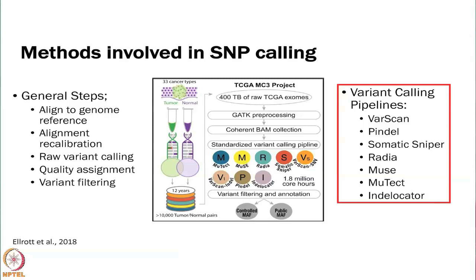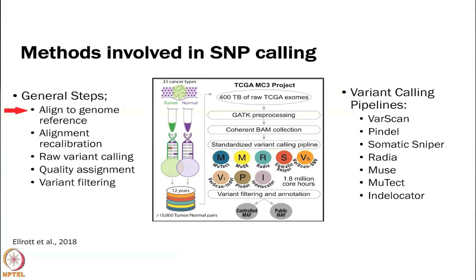A paper from 2018 reviewed some of these variant calling pipelines. The general steps for all algorithms are: align to the genome reference, do recalibration and QC, then do variant calling, look at the quality of those variants, and filter them based on quality. There are a whole bunch of pipelines — everyone has a favorite, usually the one they created or know the creator of. A lot of people use several of them and look for overlaps, since all have different strengths and limitations, and the overlap is probably the best approach.